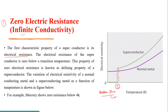When resistance becomes zero, conductivity becomes infinite — this is the superconducting behavior. Superconductivity means that when you bring the material's temperature below a particular threshold, it starts to show superconductivity. The most important characteristic of a superconducting material is that at a particular temperature its resistance becomes zero. This temperature is called the critical temperature or transition temperature. The electrical resistance of a superconductor is zero below its transition temperature. This property of zero electrical resistance is known as the defining property of a superconductor.